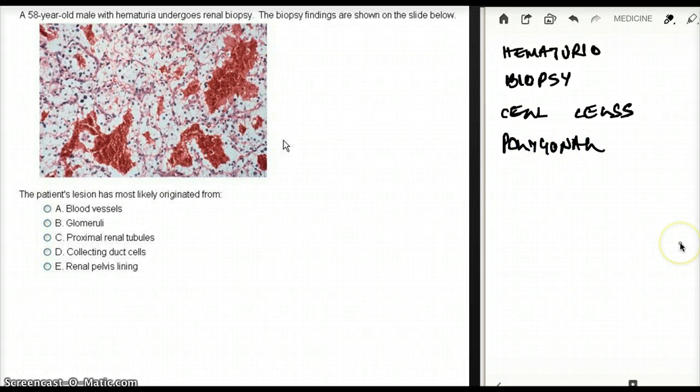They are polygonal in nature. From the picture, it's quite obvious that this is renal cell carcinoma because it says renal biopsy as well. So this is a classic picture of renal cell carcinoma.